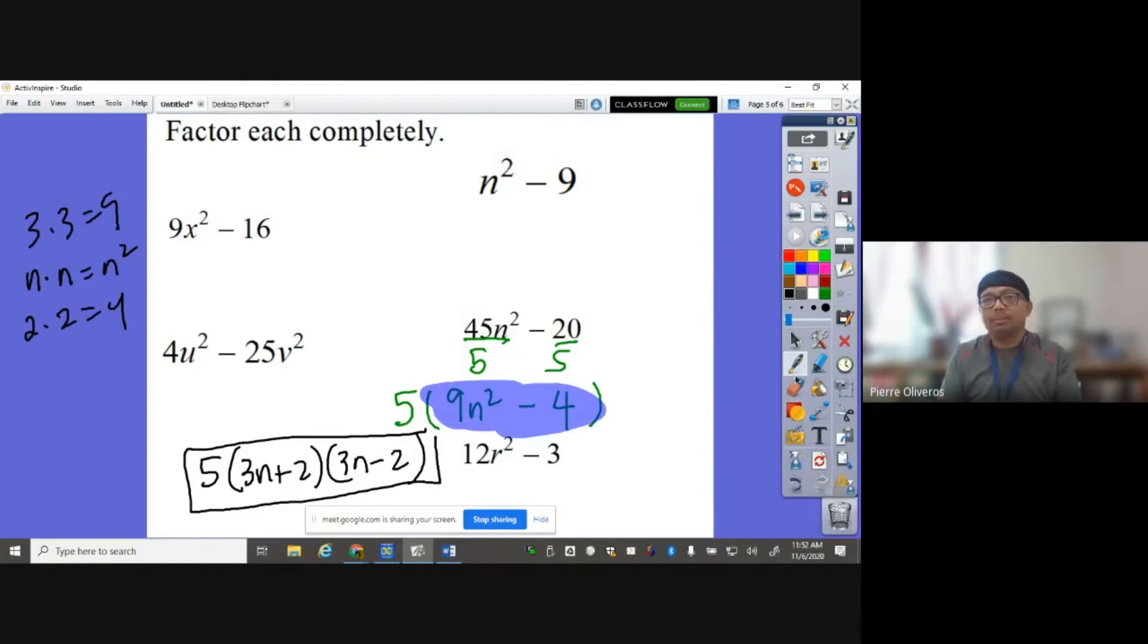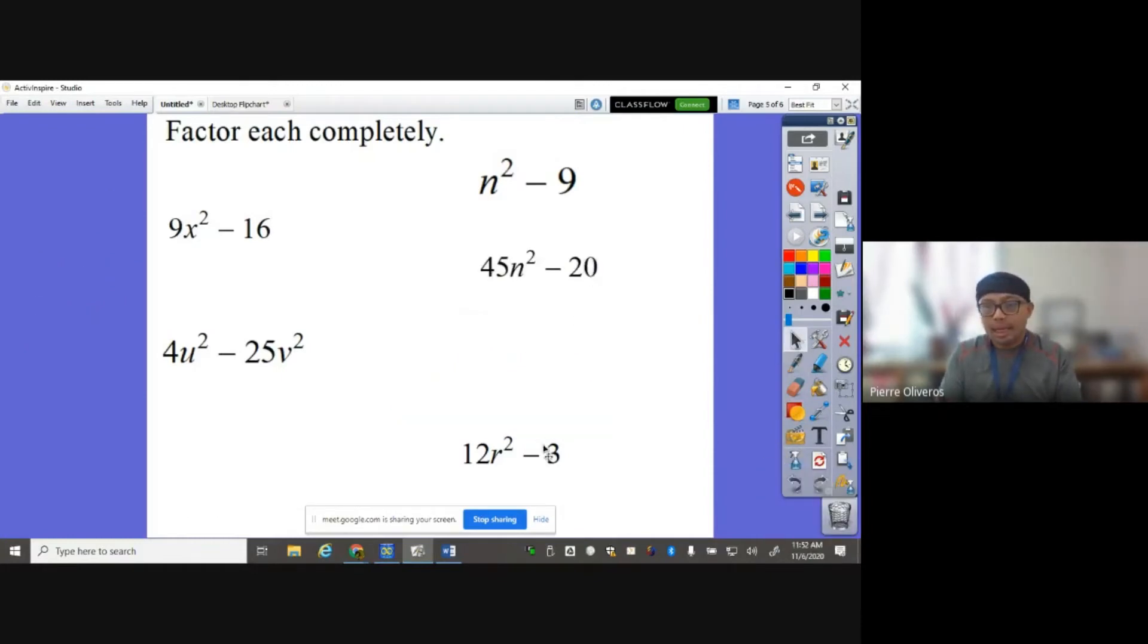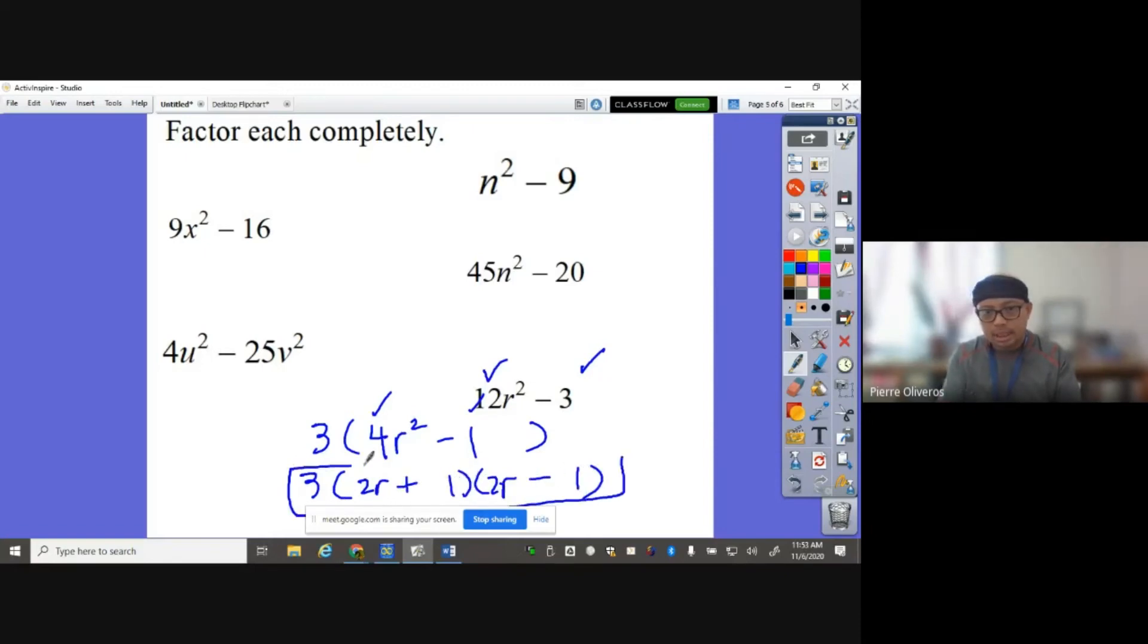Very simple, right? And last one here. 12r squared minus 3. 12 and 3 are not a perfect square number. So do they have any greatest common factor? Yes. The greatest common factor is 3. So that will give us divided by 3 will be 4r squared minus 1. And we know that 4 and 1 are perfect square numbers. They're going to be 2r and 2r, 1 and 1 positive, negative, and that's the answer. Kaboom.